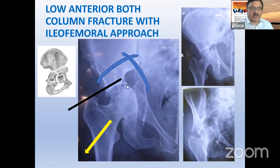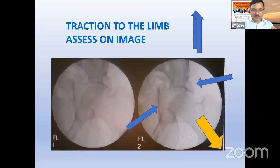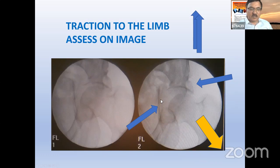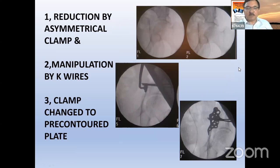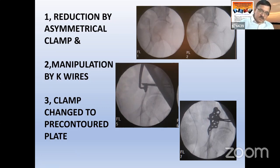Looking from the top through the iliofemoral approach, the fragments facing upward can be repositioned. Once repositioned, the fragment is pulled down with clamps. With traction, neither the quadrilateral plate displacement nor the fragment displacement is corrected by traction alone; so first derotation with a finger, then a clamp to push/pull it out. These maneuvers are achievable with the iliofemoral approach. Once reduction is achieved, a suprapectineal plate is pushed over the area, wires hold the reduction, and then a holding screw is placed for the plate.